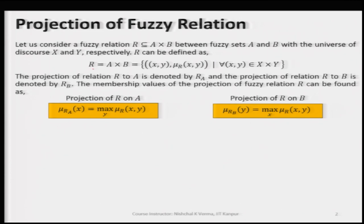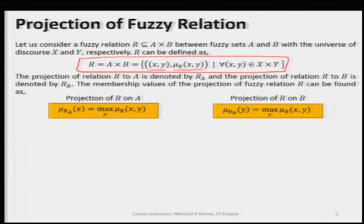When we define a fuzzy relation R, it can be expressed by A cross B — the Cartesian product of these two fuzzy sets A and B. This is equal to the set of all elements X, Y along with their associated membership values, which depend on X and Y. R is a multi-dimensional fuzzy set.